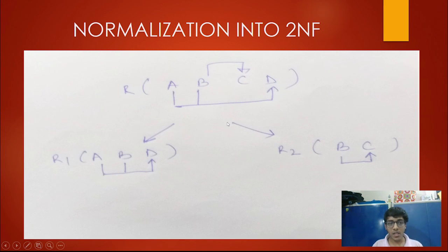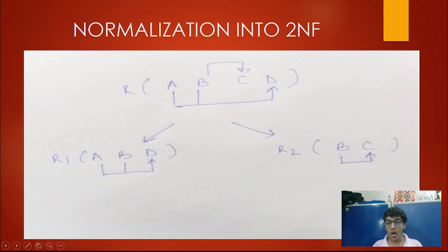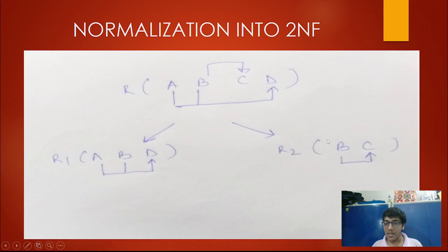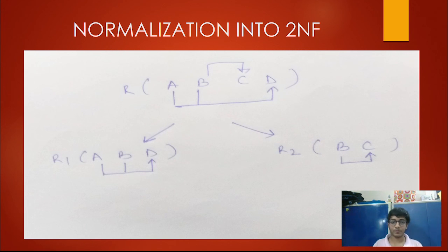To normalize into second normal form, we remove the partial dependencies by creating two relations R1 and R2. R1 has attributes A, B, D — where AB together determines D as before. R2 has B determines C. In R1, AB determines all its attributes with no partial dependency. In R2, B acts as the primary key and determines C with no partial dependencies present. Thus the table is normalized into second normal form.